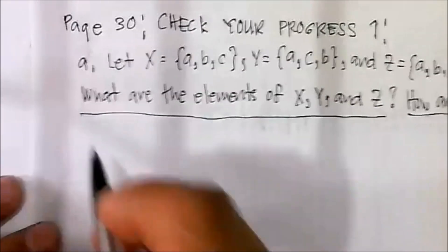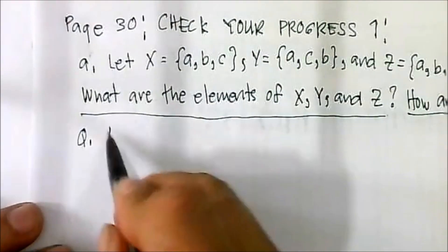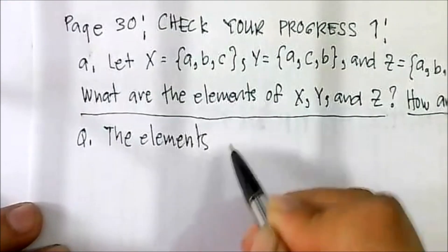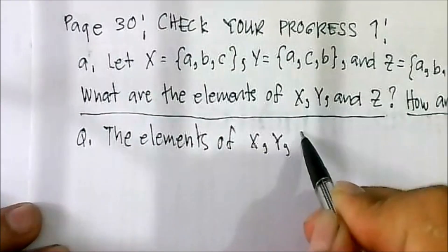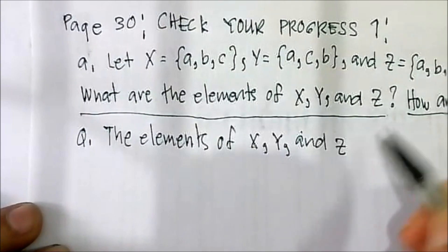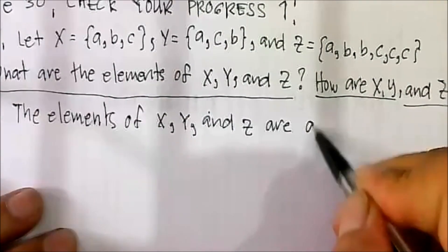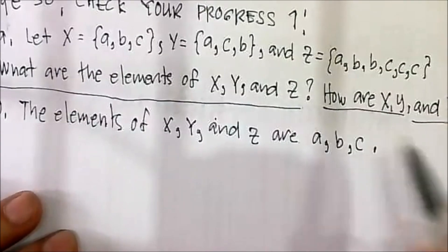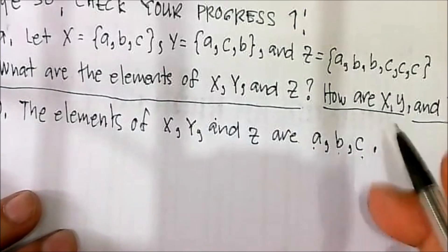So question number one: what are the elements of X, Y, and Z? The elements are of course a, b, and c.